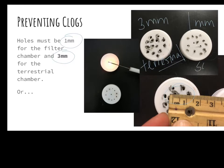For the filter chamber, holes need to be one millimeter. If they're larger, the sand will go through and they'll lose a lot of sand into the aquatic chamber. It's not a problem for sand to be in the bottom of the aquatic chamber, but then you're losing sand you need in the filter chamber. So these two measurements — one millimeter and three millimeters — are really, really important.